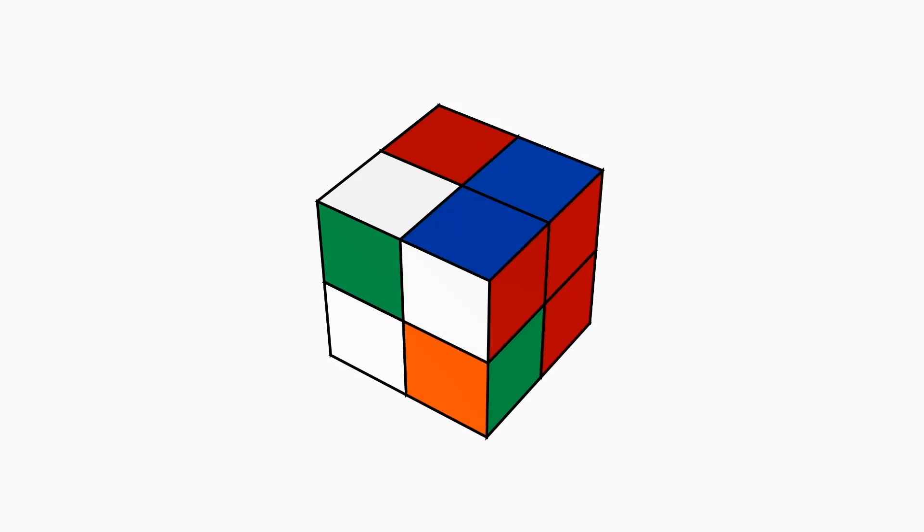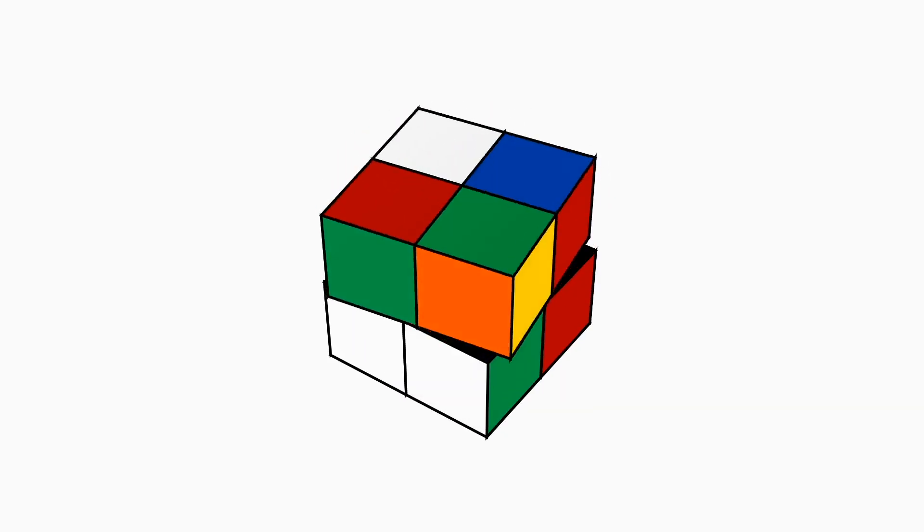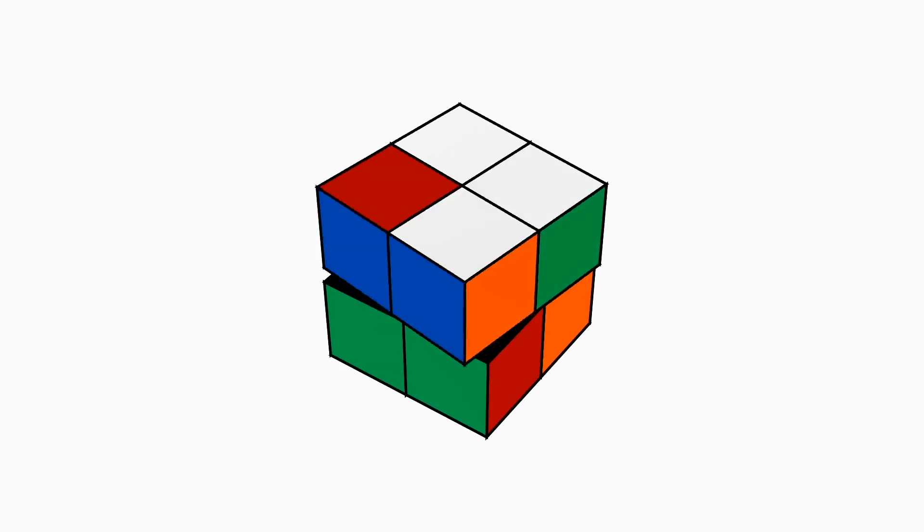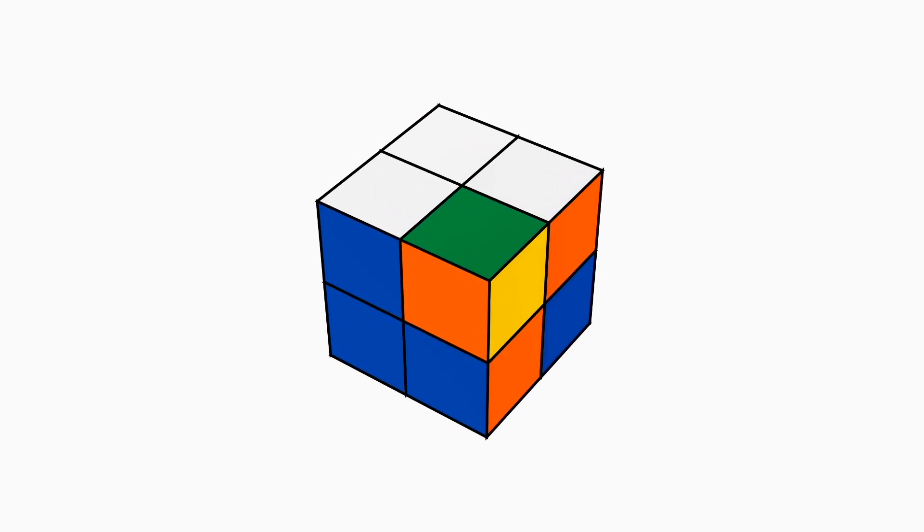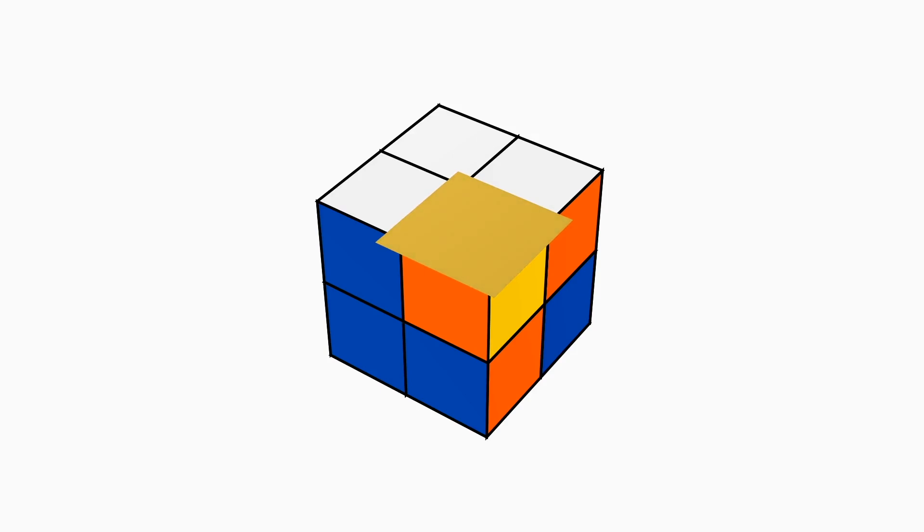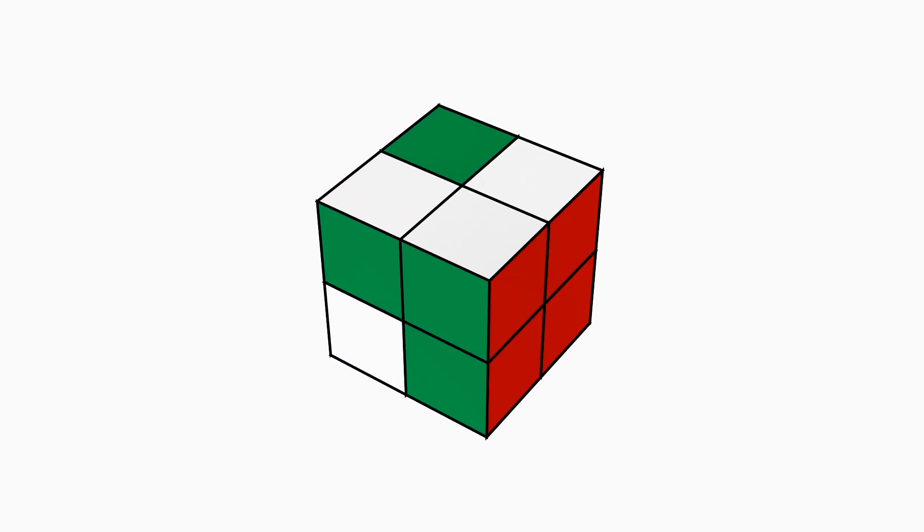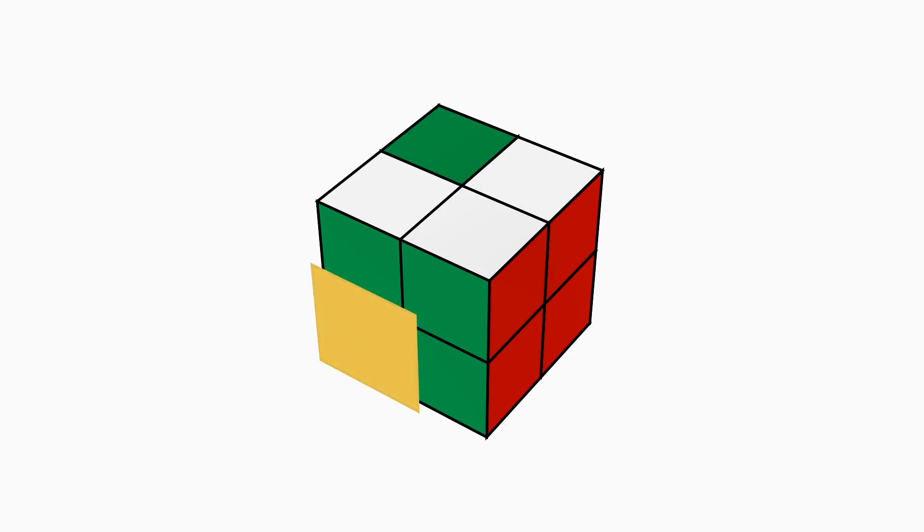We know that after swapping the buffer with the target, the piece in the target position will end up in the buffer position. This means that after we do the first swap, we will need to solve the piece that was in the target position before the swap. You can think of it as solving one piece at a time, always solving the piece that was in the previous target position. With this in mind, solvers memorize what target pieces they will swap with the buffer with.